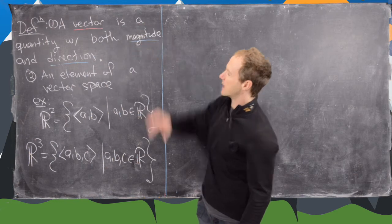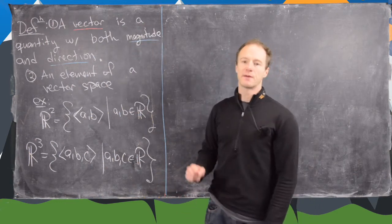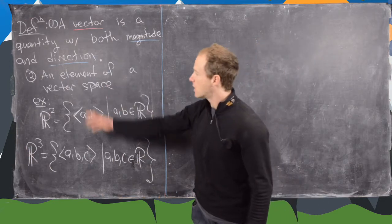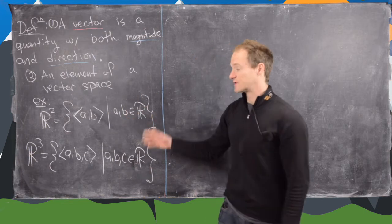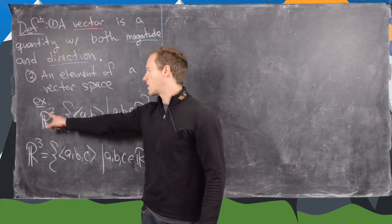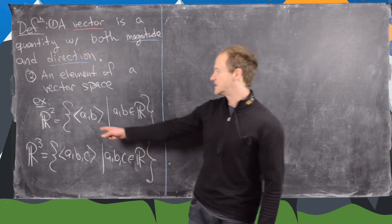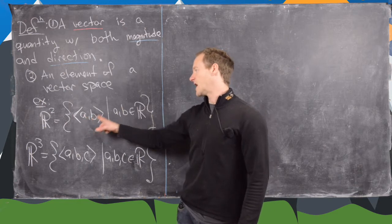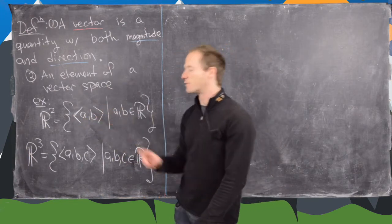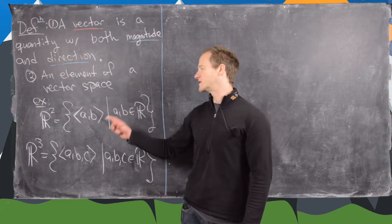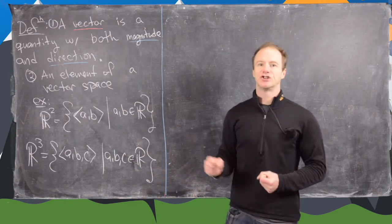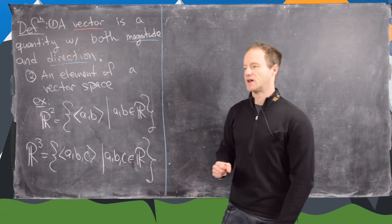We're mostly going to be thinking about it in terms of the first definition, but if you've seen linear algebra, you might also think about the second definition. Examples of vector spaces — in other words, places you would find vectors — would be R2, which is the set of all ordered pairs ⟨A, B⟩ where A and B are in R. But it's not exactly ordered pairs because we use angle brackets. Vectors have more of an action to them, whereas ordered pairs are just static points.